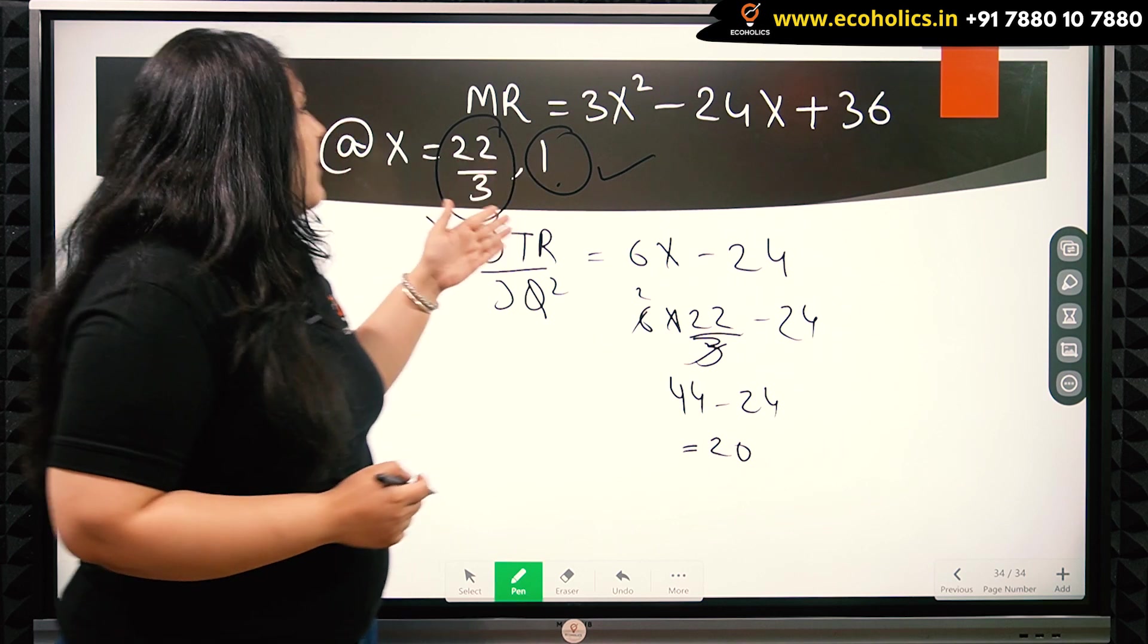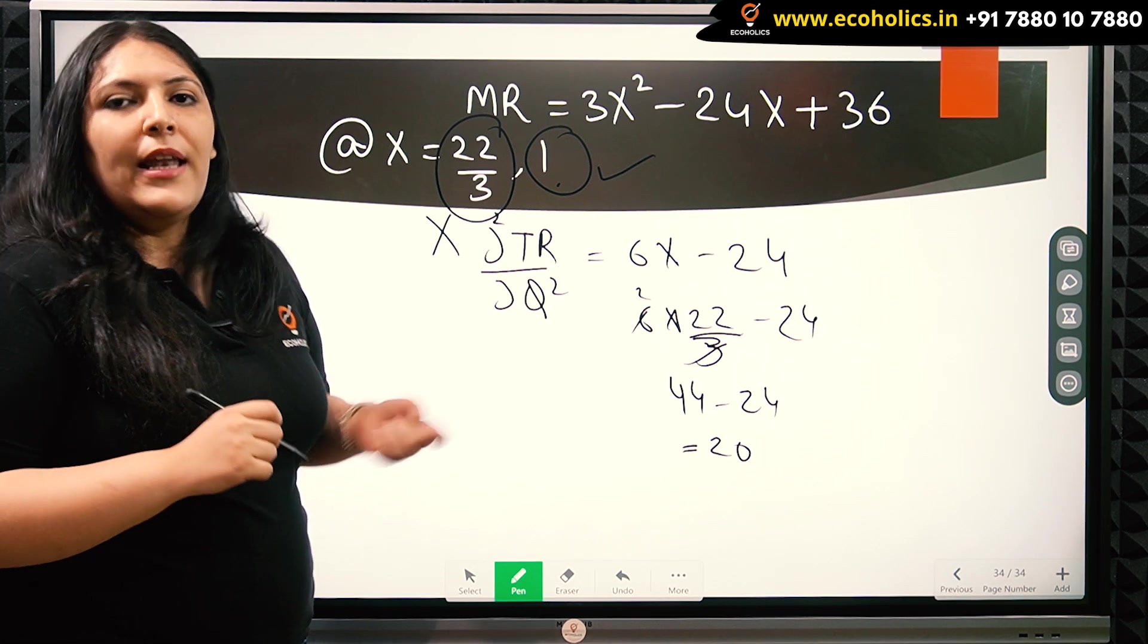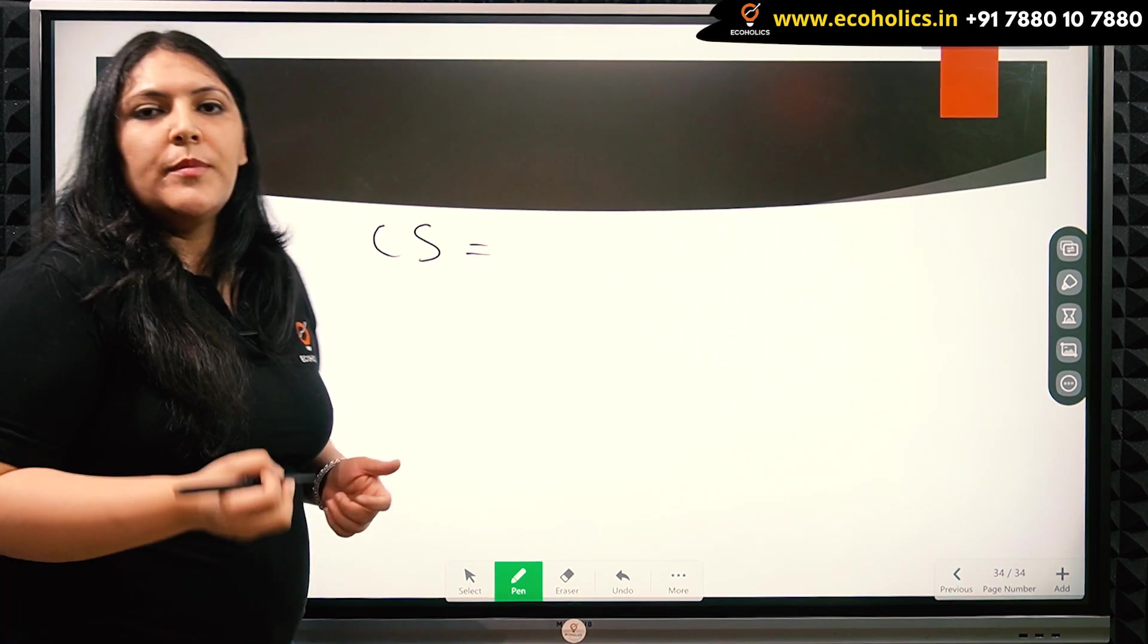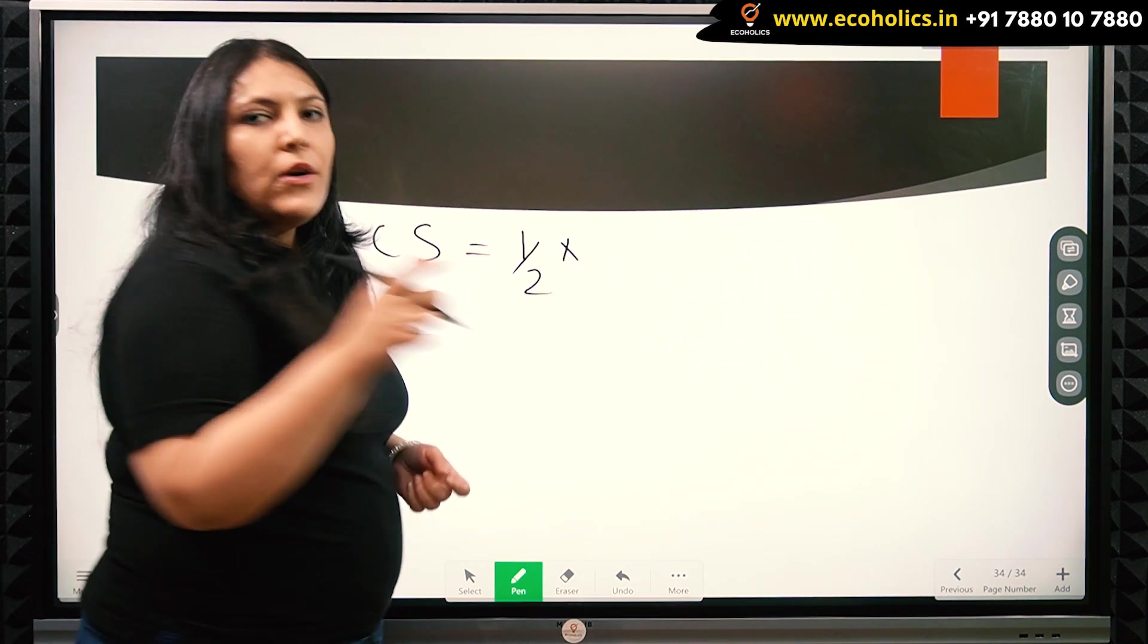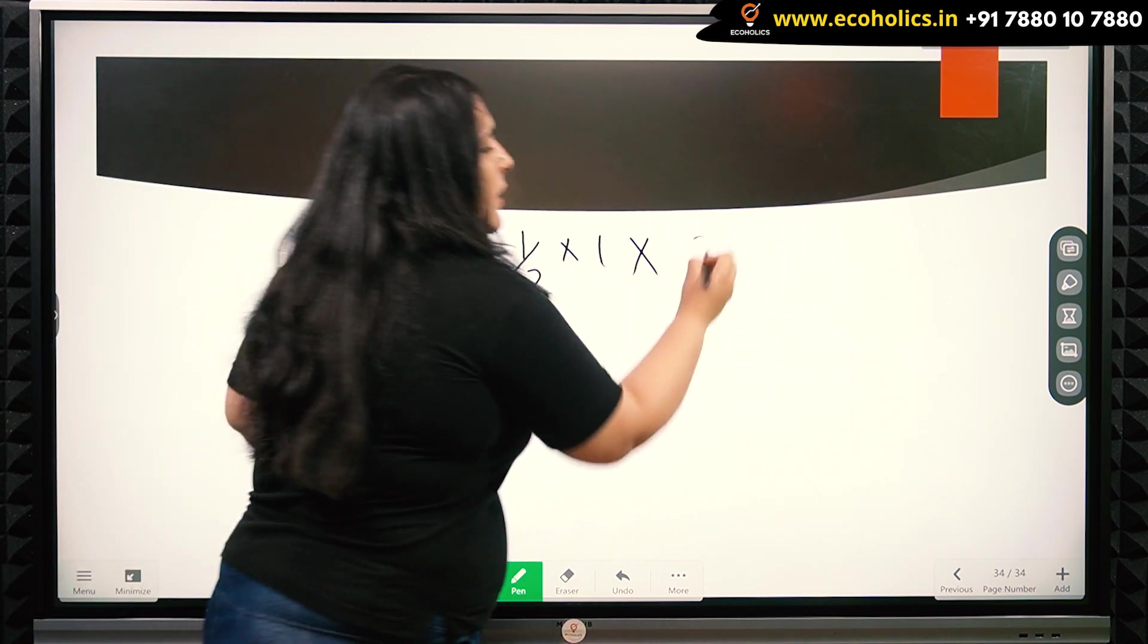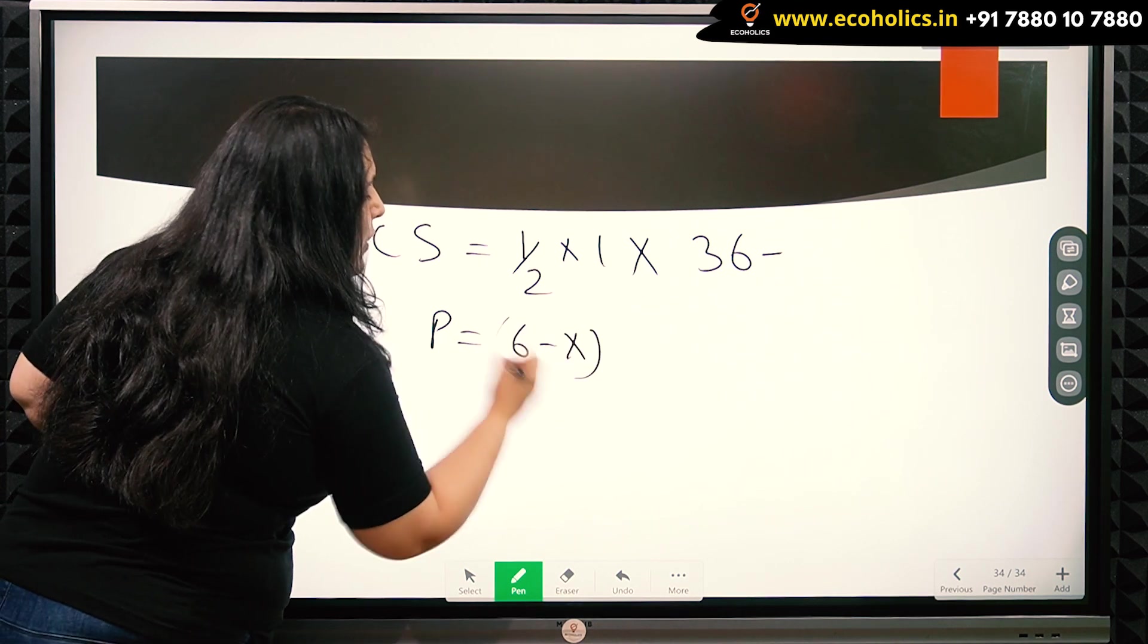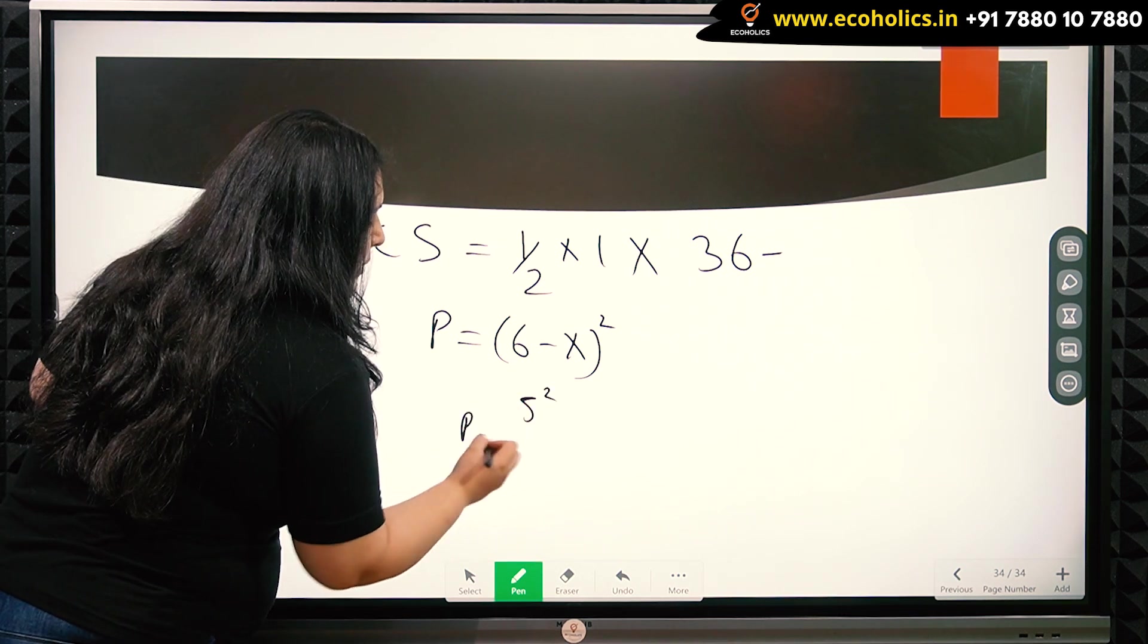So we can put the value of the quantity produced in the diagram or directly find out the value of consumer surplus. The value of consumer surplus is half times base times height of the triangle. The base of the triangle is the quantity that the monopolist will produce which is 1, and the height of the triangle is 36 minus the equilibrium price which was (6-x)². Putting the value of x as 1, we get 5² or 25. So the price is 25.